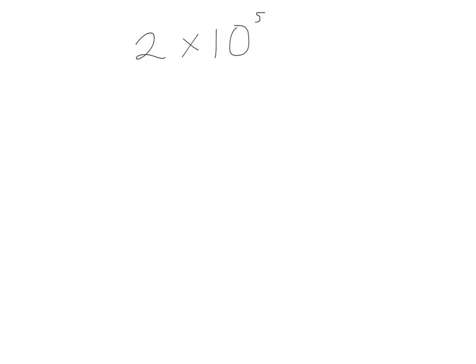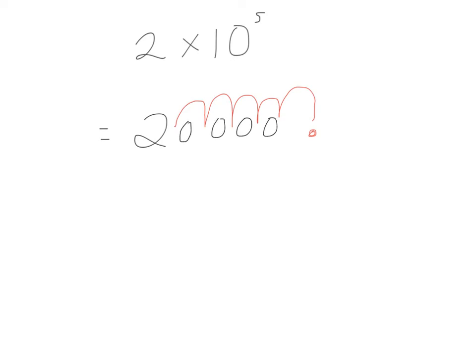If we were asked the reverse of this question — if we were asked to write something as an ordinary number when given it in scientific notation — how would we do that? We write down the first part, so 2. This tells us how many spaces the decimal point has moved from here: 1, 2, 3, 4, 5. So my decimal point would go in here. What you then just have to do is fill in the spaces with zeros. We obviously wouldn't write a leading zero that's not needed, so this would simply be 200,000.